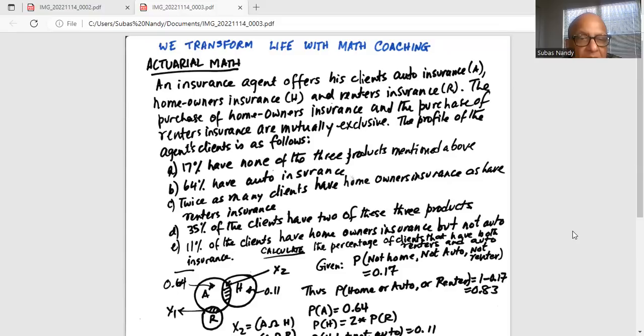We have 17% have none of the three products mentioned above. 60% have auto insurance. Twice as many clients have homeowner's insurance as have renter's insurance. And then 35% of the clients have two of these products. 11% of the clients have owner's insurance but not auto insurance.